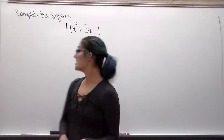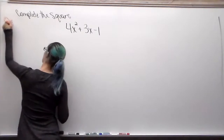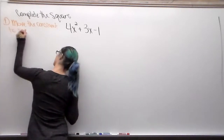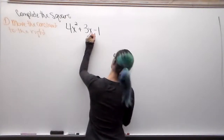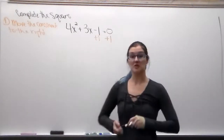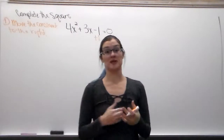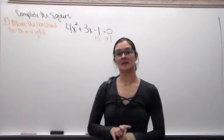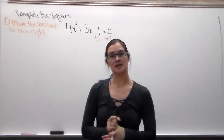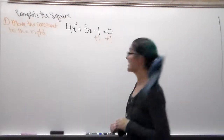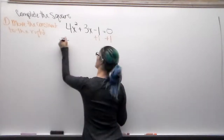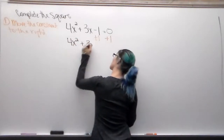Your first step in completing the square — Step 1 — is to move the constant to the right. So we are going to add one. My problem is written incorrectly without an equal sign, but for my college algebra class we're going to do it with an equal sign. So that is going to give us 4x² + 3x = 1.